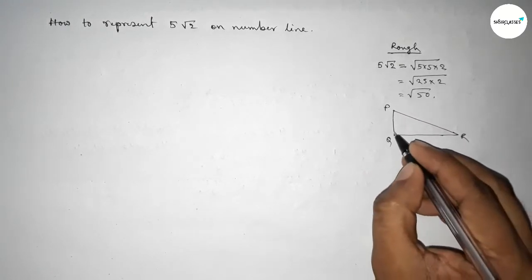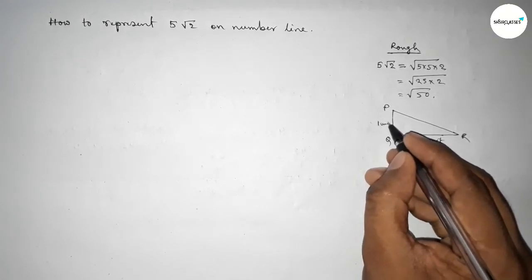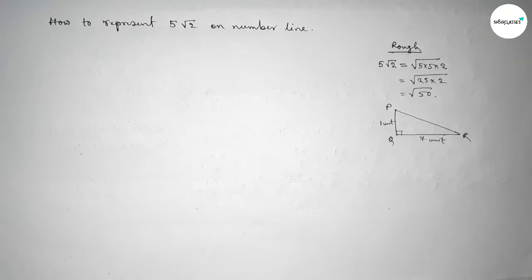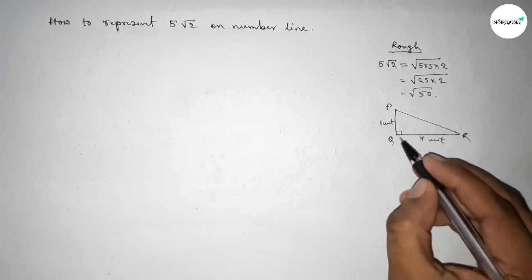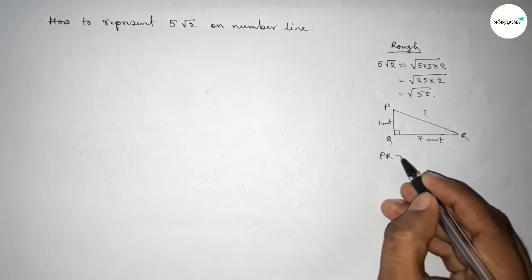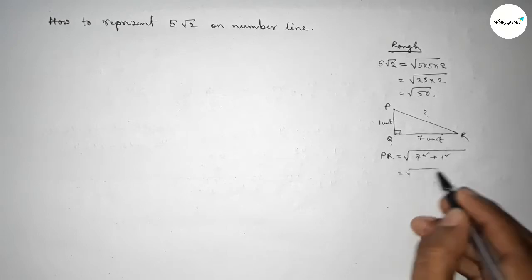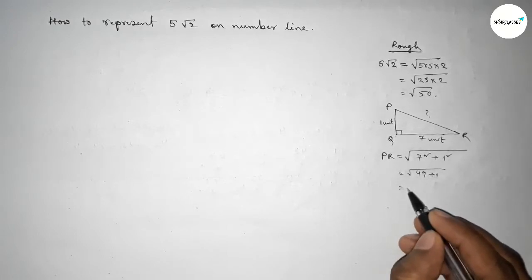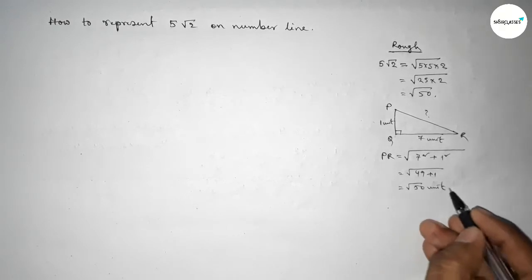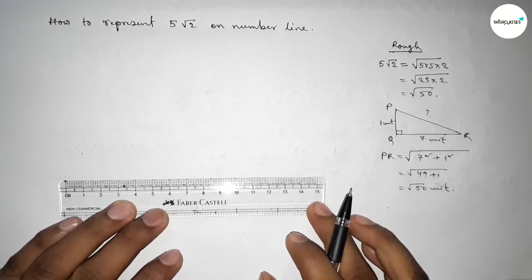Triangle PQR with the base is 7 unit and height is 1 unit, then what is the hypotenuse PR? By Pythagoras theorem, PR hypotenuse equal to root over base square plus height square, so 7 square plus 1 square, so this is √50 unit. So we have to apply this concept here.